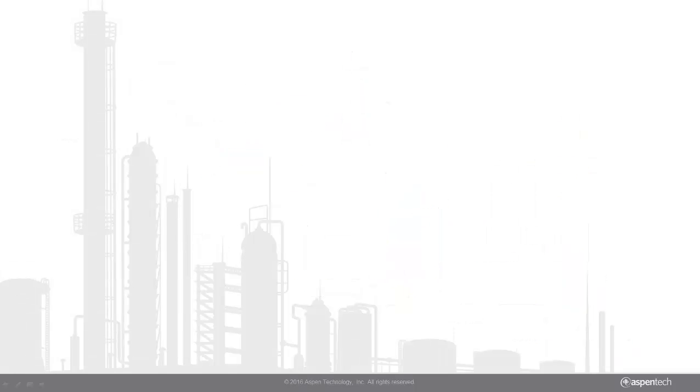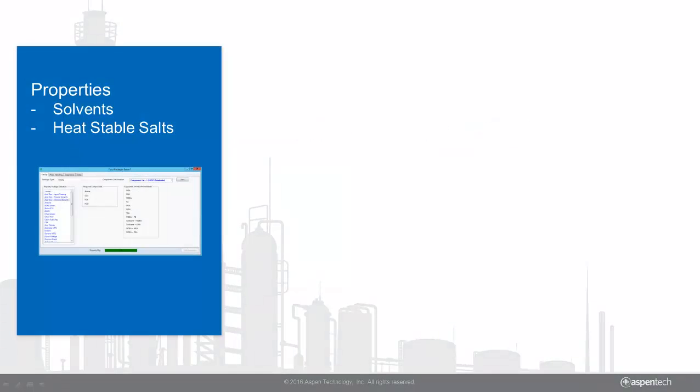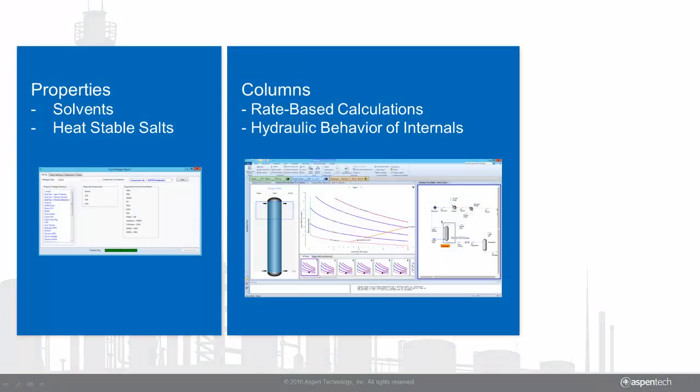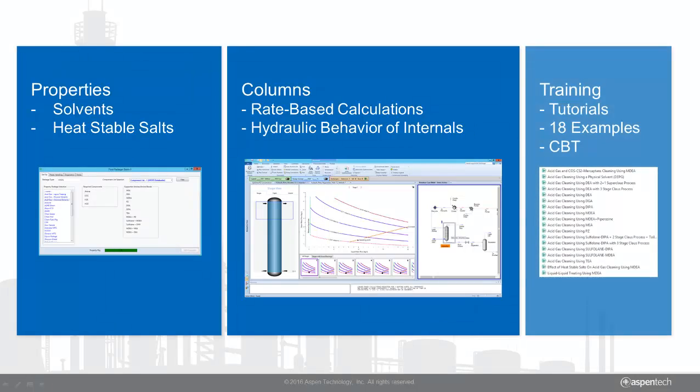The addition of acid gas cleaning technology in Aspen Hysys includes specialized property packages, column internals, rate-based calculation models, and the ability to consider heat-stable salts and the performance of the regenerator, as well as pre-built models you can use to get started.